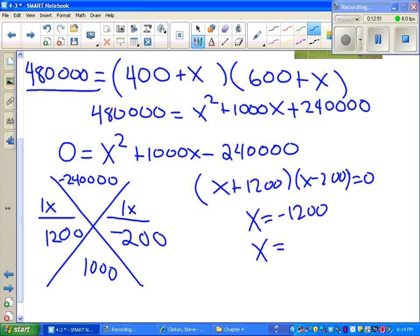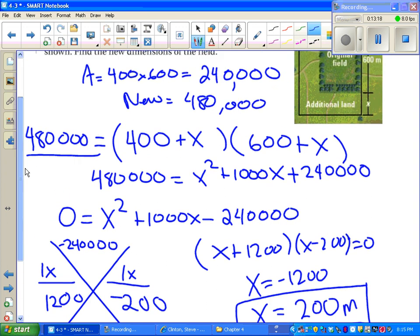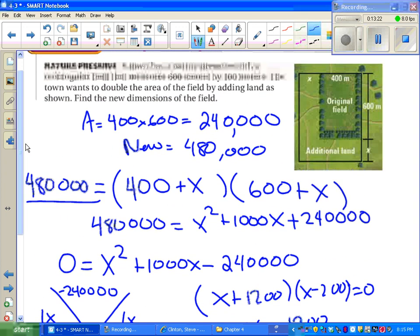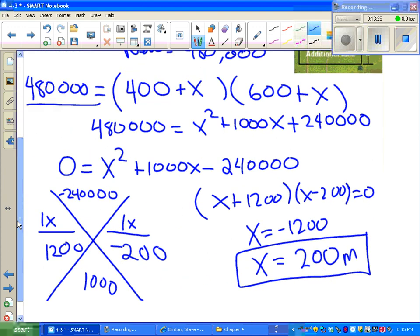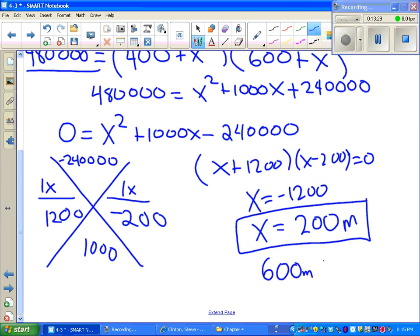Only one of them makes sense. Go ahead and pause the video for a second and try to think about which one of these answers makes sense in the context of the problem. If you guessed x equals negative 1200, you're wrong. You can't have, we can't lower the length of the side by 1200. But we can increase it by 200 meters. You can always go back and check your answer. We're not quite done either. Let's find the new dimensions. We were 400 by 600. Now we have to add 200 to each. So 600 meters by 800 meters. You can multiply those together and see that it is in fact 480,000. It was a big problem, but we got through it.